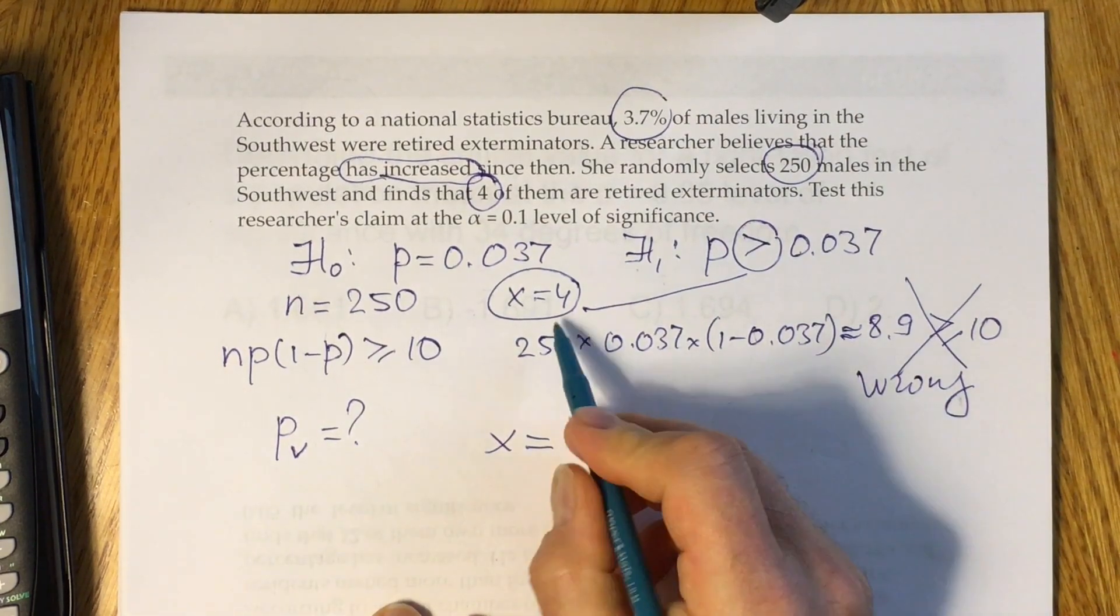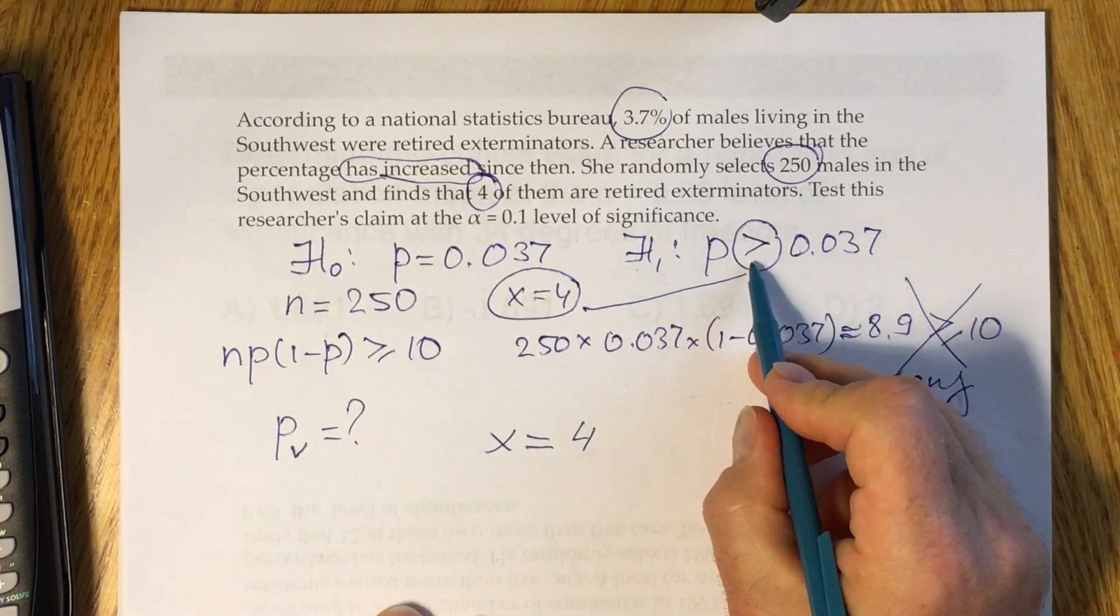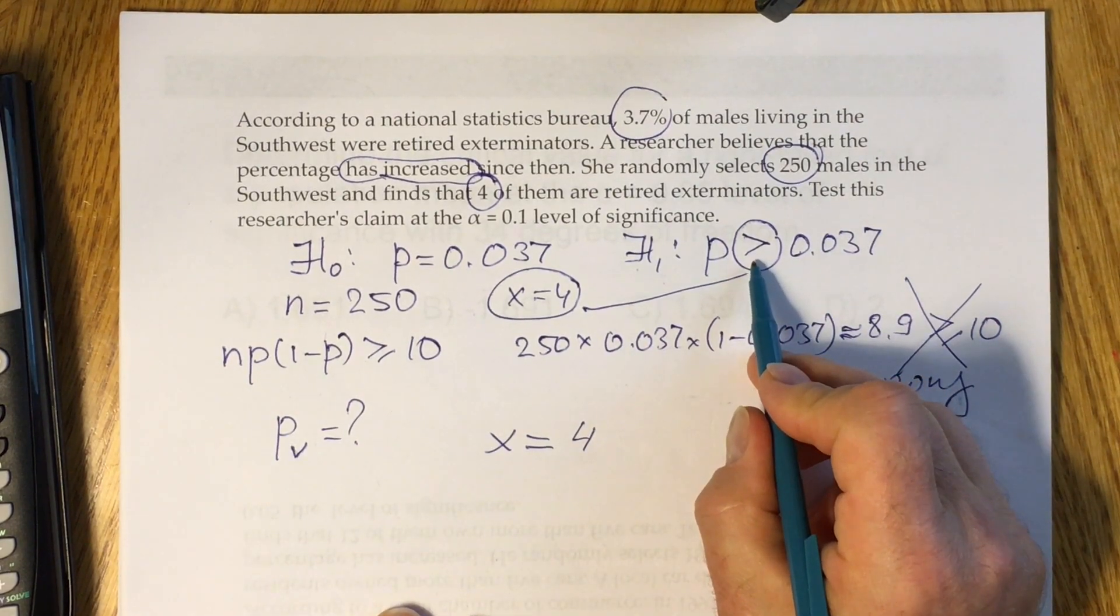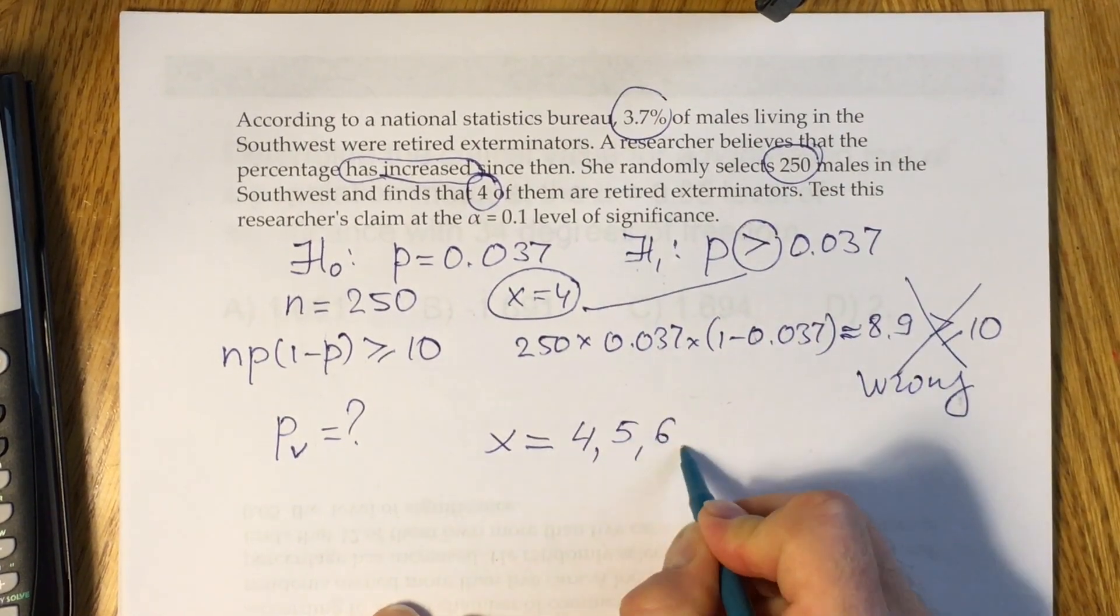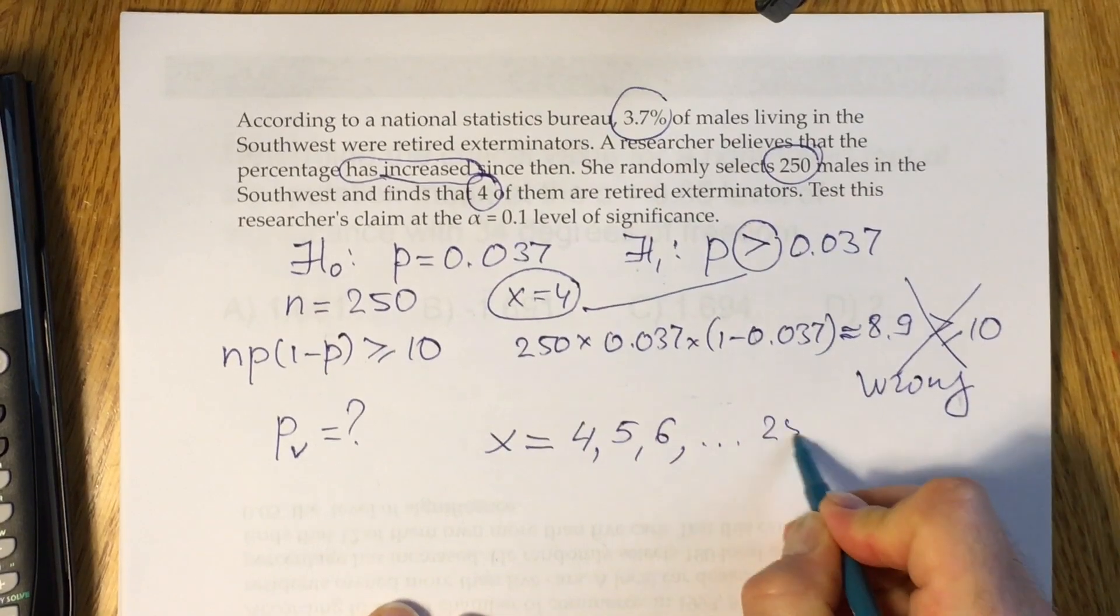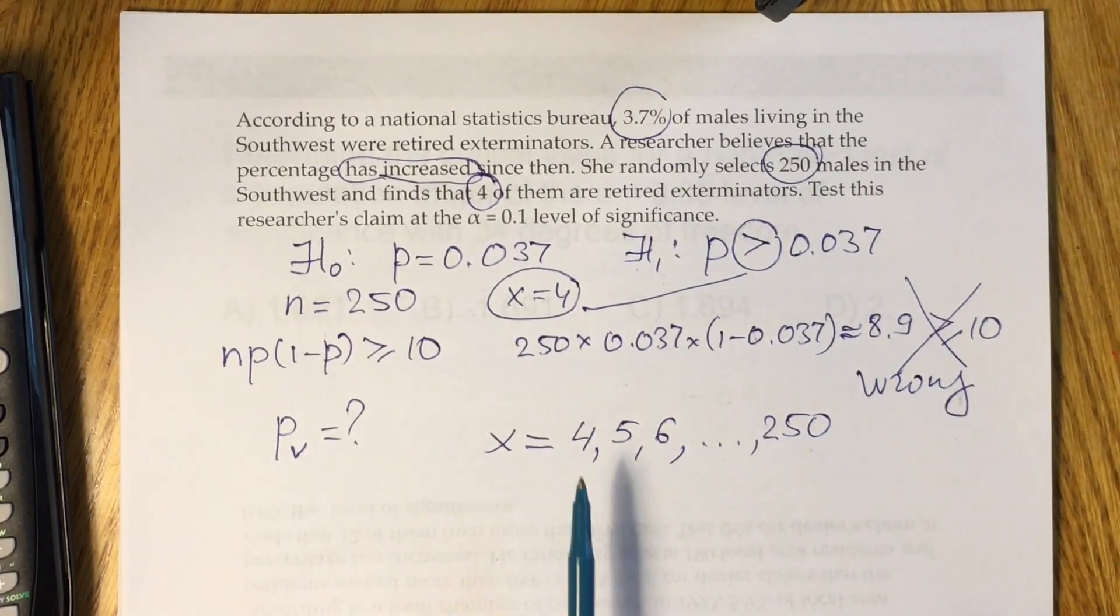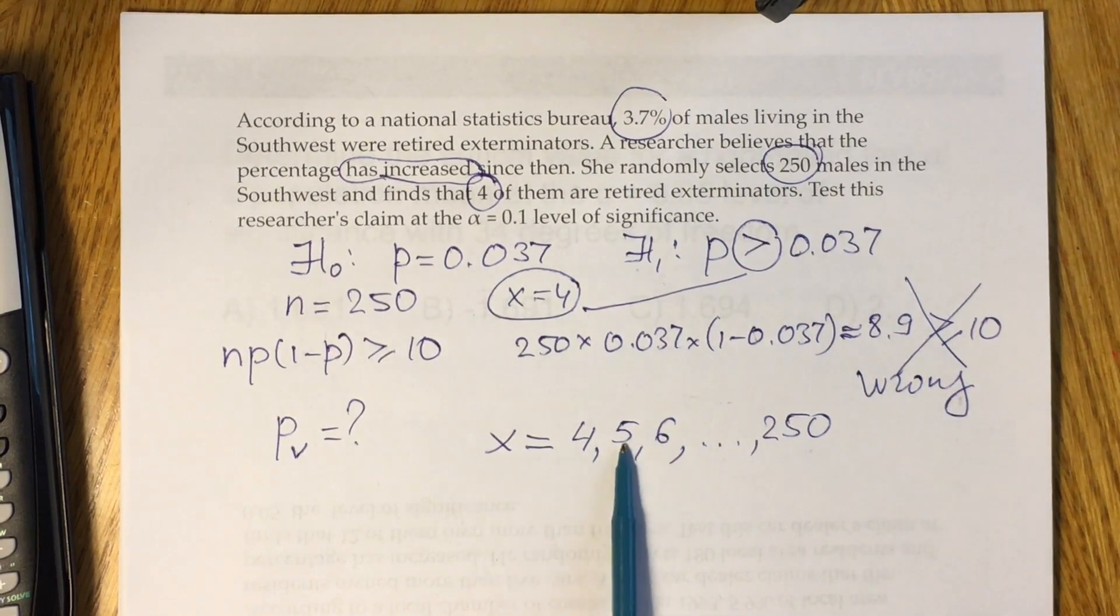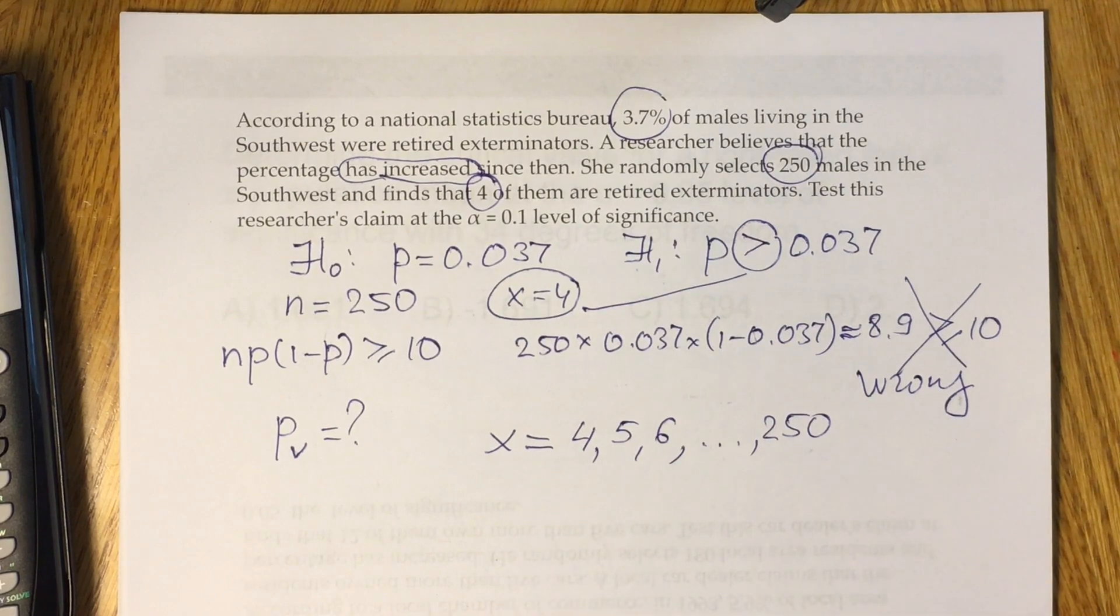You have to start from the value you have in x, 4 in our case, and go in the direction indicated by the sign in alternative hypothesis. It's greater. So you have 4, 5, 6 up to 250. So our p-value will be probability that you could have 4 plus probability that you could have 5 plus probability you could have 6 and up to 250. Clearly, it's a lot of work if you calculate probability for each particular number.